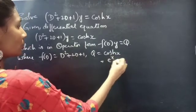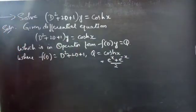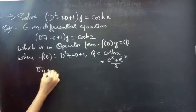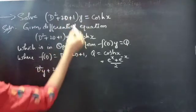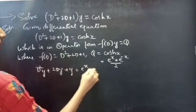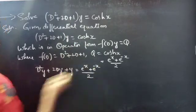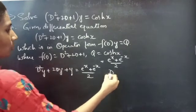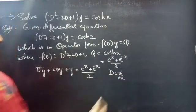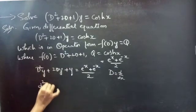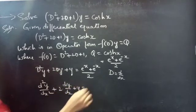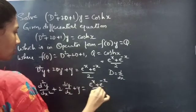We know that cosh(x) = (e^x + e^(-x)) / 2. So we need to rewrite the given equation as d²y/dx² + 2·dy/dx + y = (e^x + e^(-x)) / 2, since cosh(x) = (e^x + e^(-x)) / 2, using the differential operator D = d/dx.